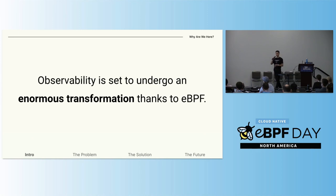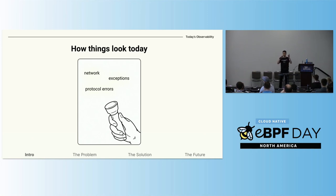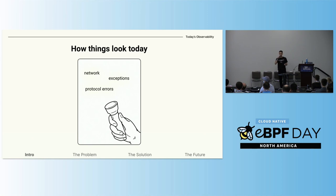Observability into our clusters will undergo an enormous revolution in the coming years, thanks to eBPF. When I say observability, I'm talking about our ability as developers and DevOps to see everything that's going on in our cluster — all the interactions between our services, all the metadata that accompanies them, various events such as program exceptions and protocol errors, and determining exactly when all of this occurs and to which processes it belongs. This is what I call full observability.